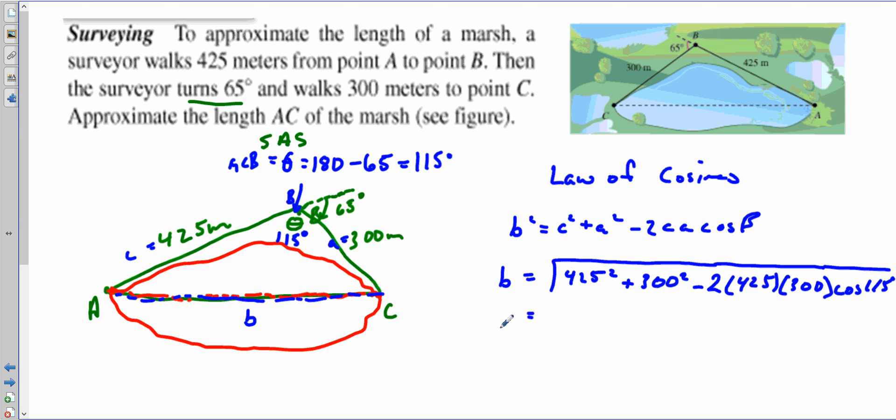We can put this in our calculator and we can find this side, the length AC. What we're looking for is approximately 615.1, if you round to a tenth, meters.